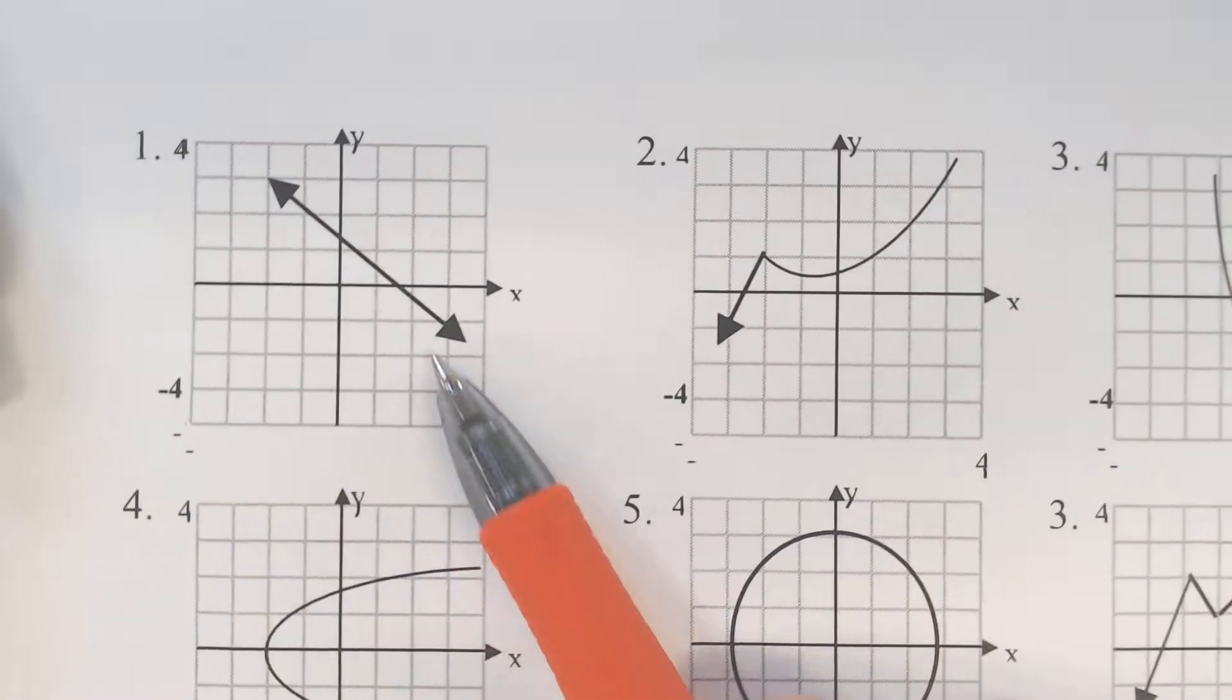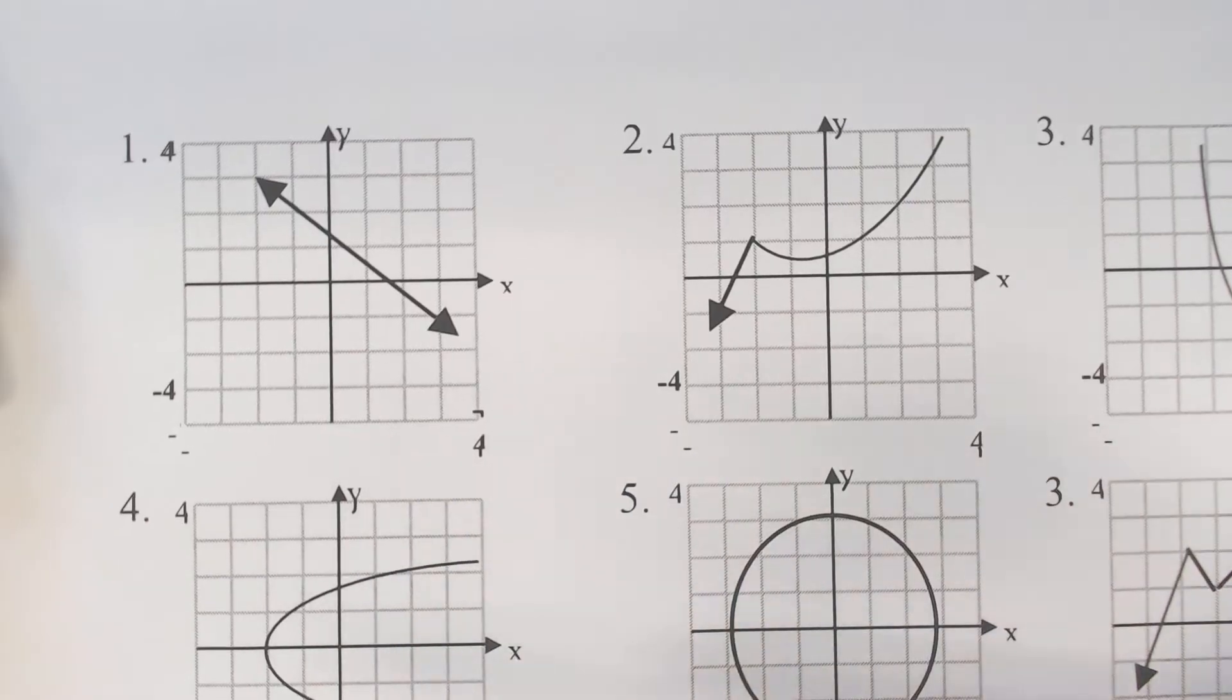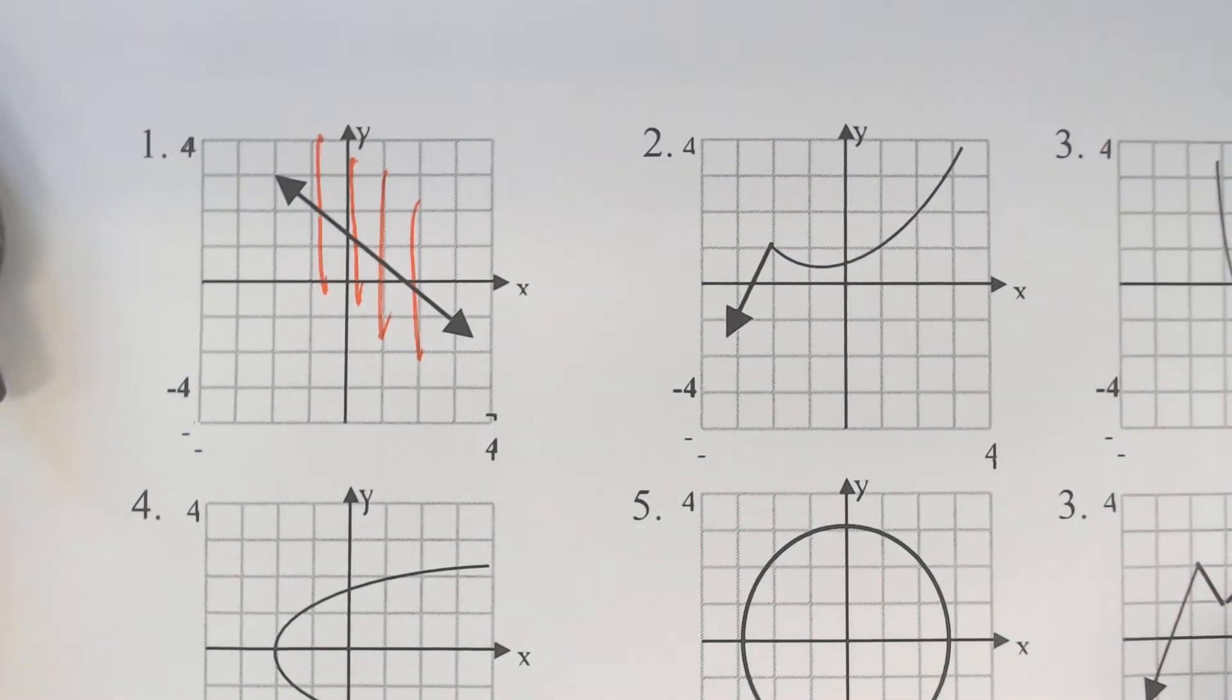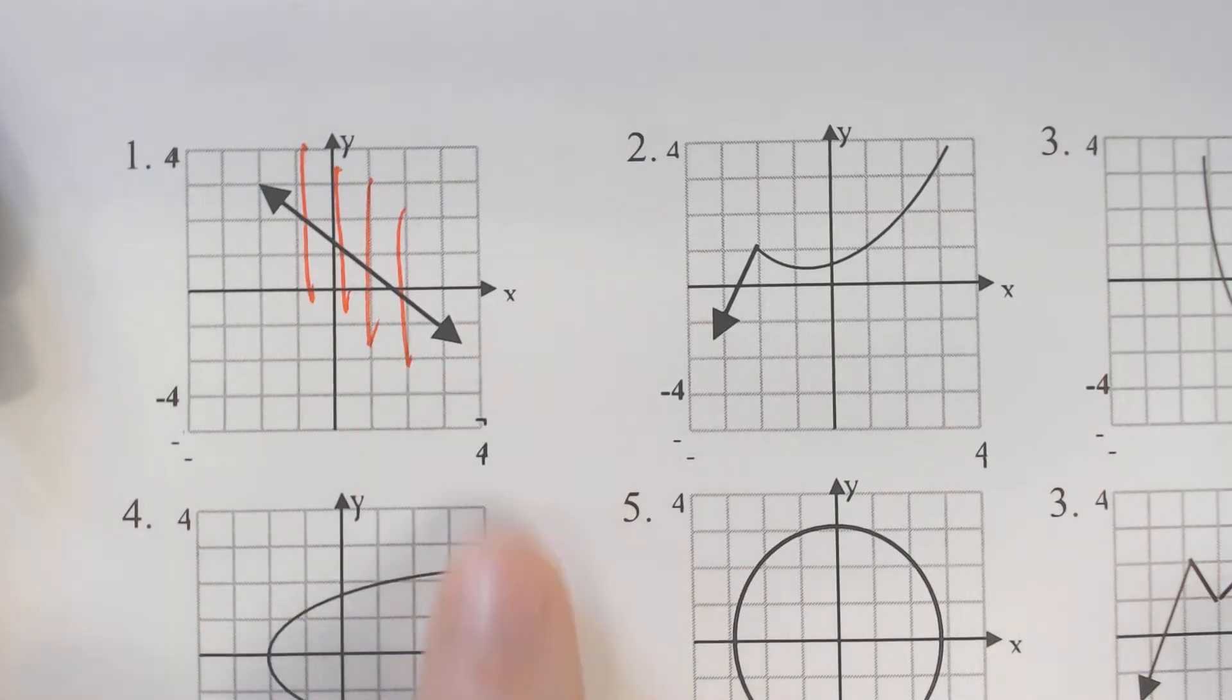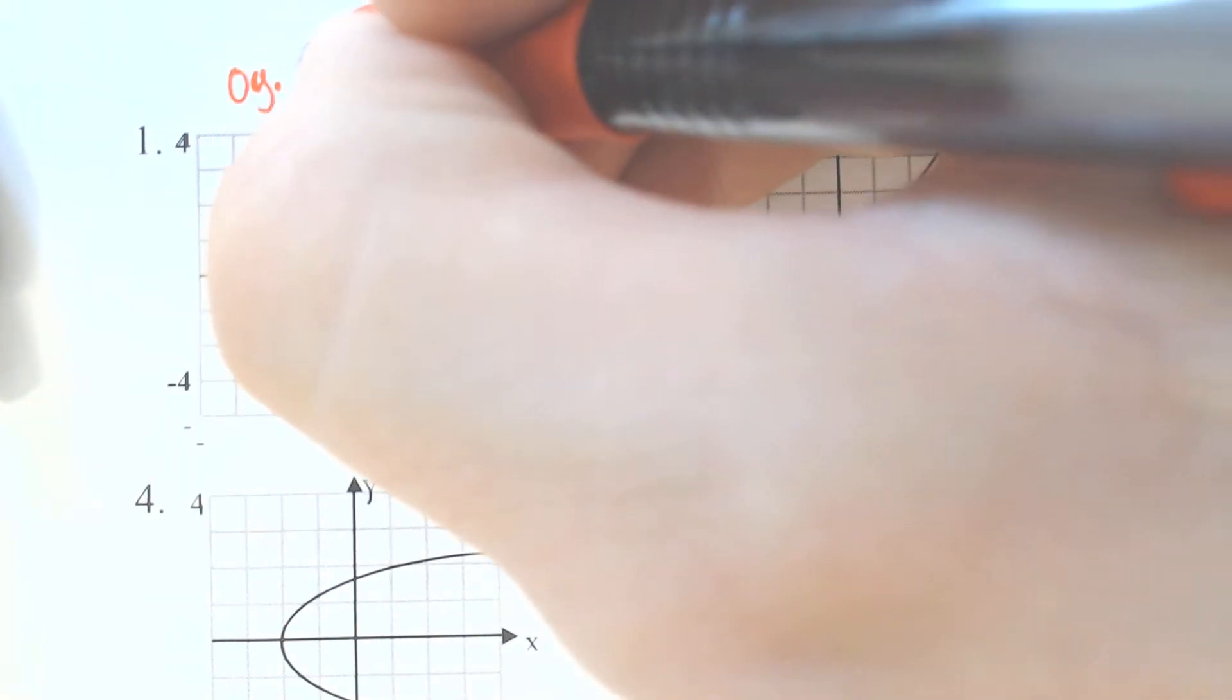So the original function is the vertical line test, and this one right here on number one definitely passes the vertical line test. It only crosses through once, which means the original is a function.